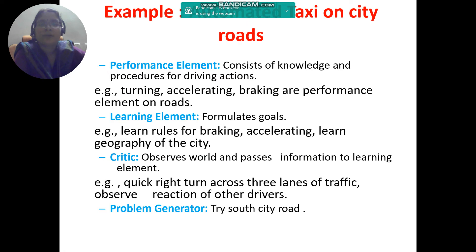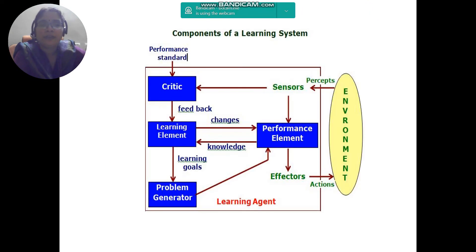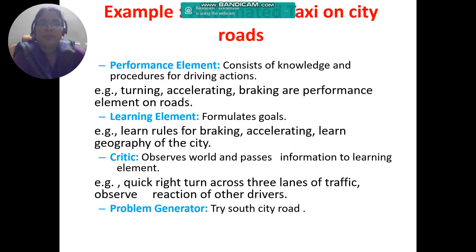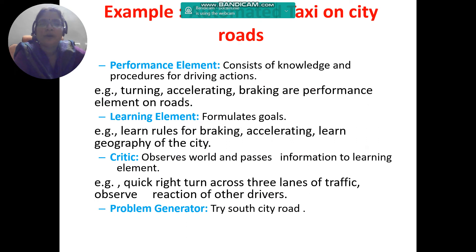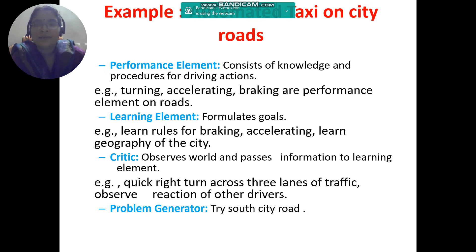An example of this is an automated taxi on city roads — a very good example of a learning agent. The performance element of this consists of knowledge and procedures for deriving actions. The actions include turning, accelerating, and braking.